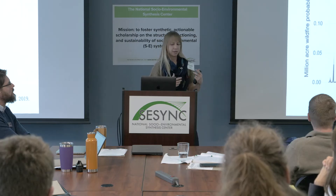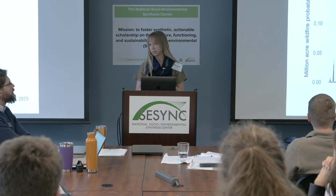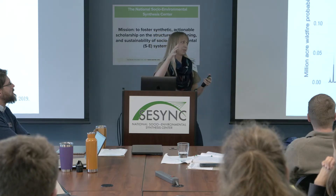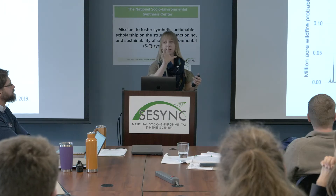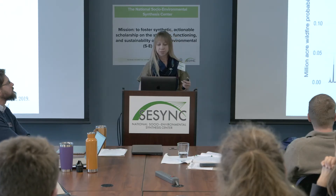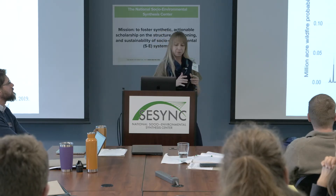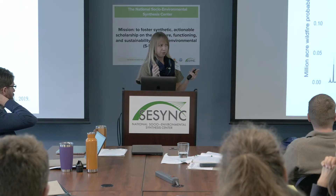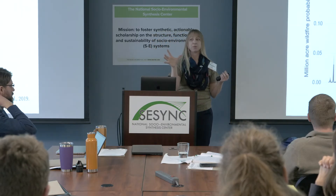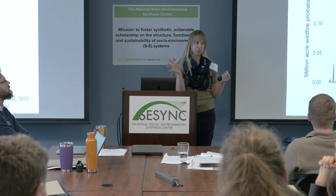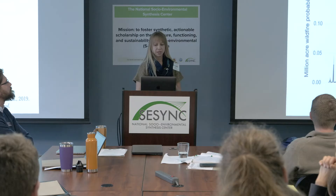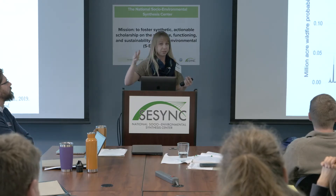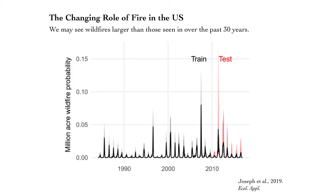Not surprisingly, dryness and air temperature predict extreme wildfire probabilities. Housing density has a hump-shaped relationship with wildfire occurrence, so we see the highest probability of wildfire at intermediate levels of housing density. This is happening in two ways: it's altering wildfire size distribution, and because there's more frequent fire, that influences sampling from the tails of that wildfire size distribution. The upshot is that there's a non-negligible chance of extreme wildfires larger than those we've seen over the past 30 years in the United States.